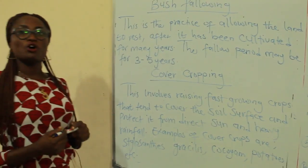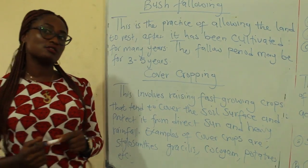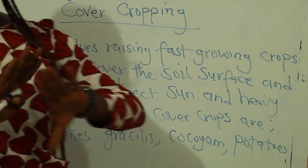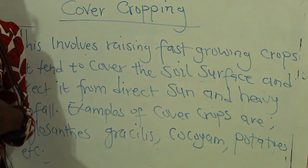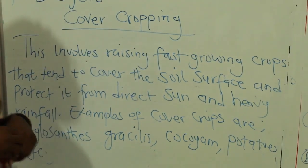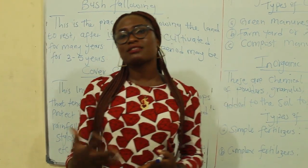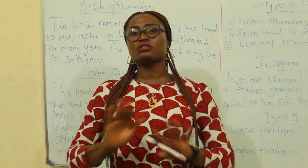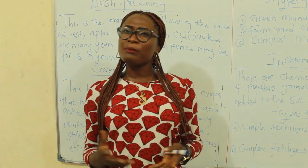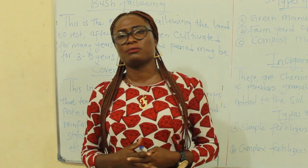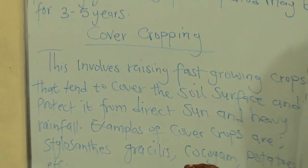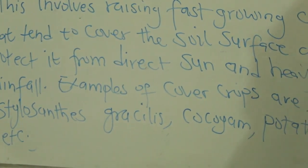The third way of maintaining soil fertility is cover cropping. This involves raising fast-growing crops that tend to cover the surface of the soil and prevent harsh sun or heavy rainfall from touching the soil. Examples of crops that can be classified as cover crops include Stylosanthes gracilis, coco yams, and potatoes, among other types.